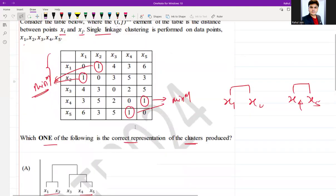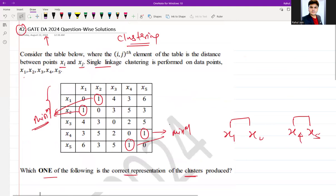Now after merging them, if you see the next minimum distance, the next minimum distance is 2. This 2 is the next minimum I can see and that is between x3 and x4.